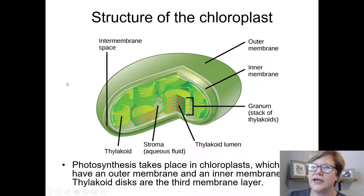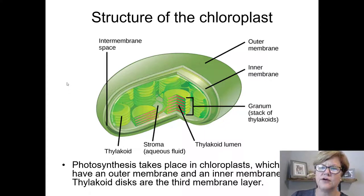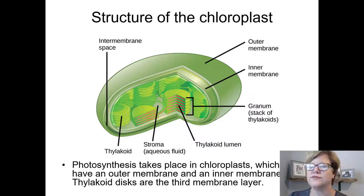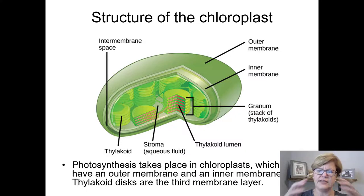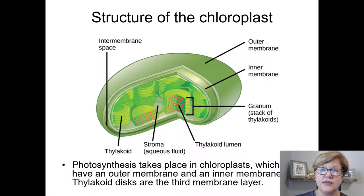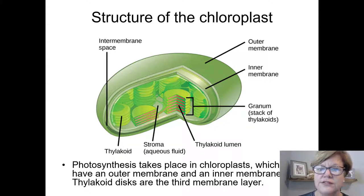The chloroplast in a eukaryotic cell is the organelle that serves as the location for photosynthesis. There are slightly different structures in bacteria, but we'll focus on the chloroplast. The chloroplast has three layers of membranes: the outer membrane, which is smooth; the inner membrane, also smooth; and inside the inner membrane there is another level of membranes called the thylakoids or thylakoid discs, and there are many of them stacked up.